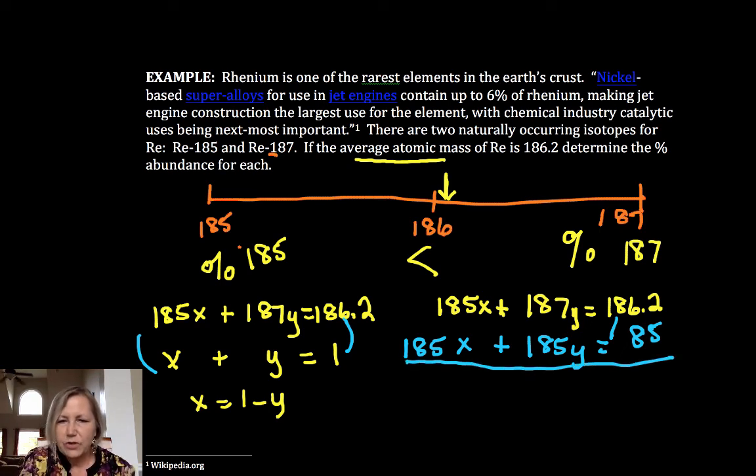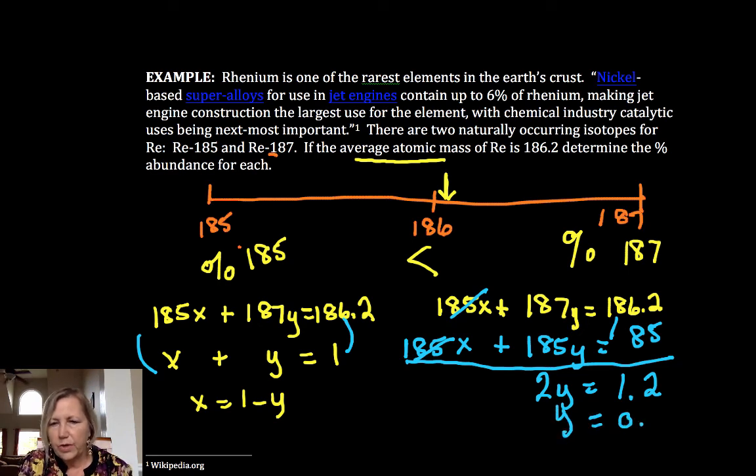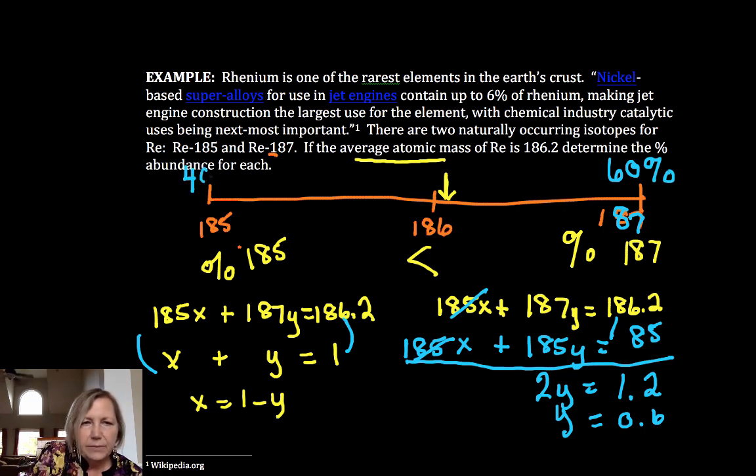So let's subtract those. X is, that goes away. I end up with 2y is equal to 1.2. So y is equal to 0.6, which means that the 187 isotope is 60% abundant, and the 185 must be 40% abundant because the sum of the percents have to equal 100.